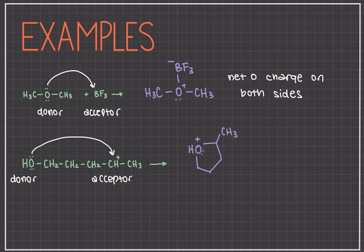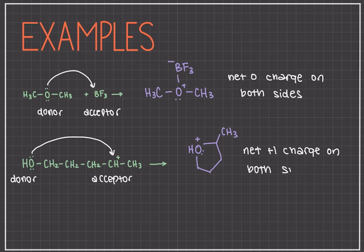Again, we can see that there's a net plus one charge on both sides. On the reactants, there was a plus one charge on the carbon, and now on the products, there is a plus one charge on the oxygen — so a net plus one charge on both sides.